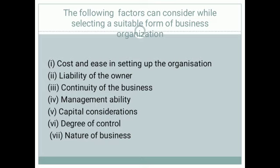The third factor is continuity of the business. In sole proprietorship, if the single owner dies, the business may stop. In partnership, if something happens to a partner, the partnership may close, unless a fresh agreement is made. In joint Hindu family business, the next senior person takes charge, so the business remains safe. In cooperative societies and joint stock companies, members may come and go, but the business continues.